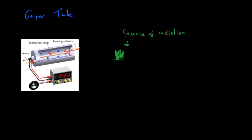We take a baseline reading without the source, then introduce our source and take our reading again. The difference between the baseline reading and the reading with the source tells you the amount of radiation given off by your source, because that means we're accounting for the background radiation. What we're actually measuring is called the count rate — that is the amount of radiation given off by the source.